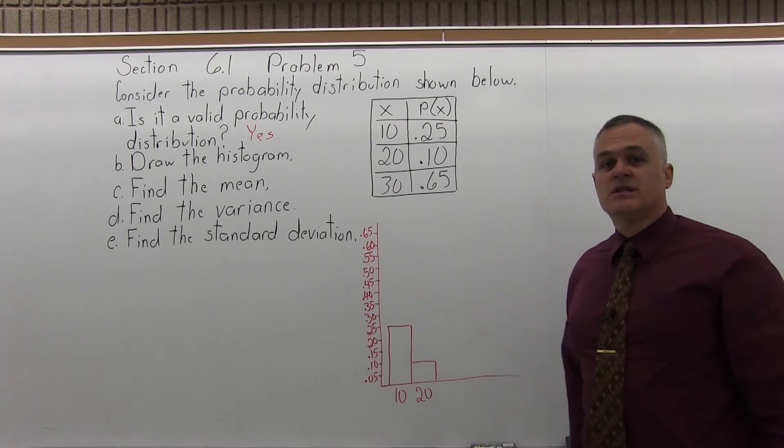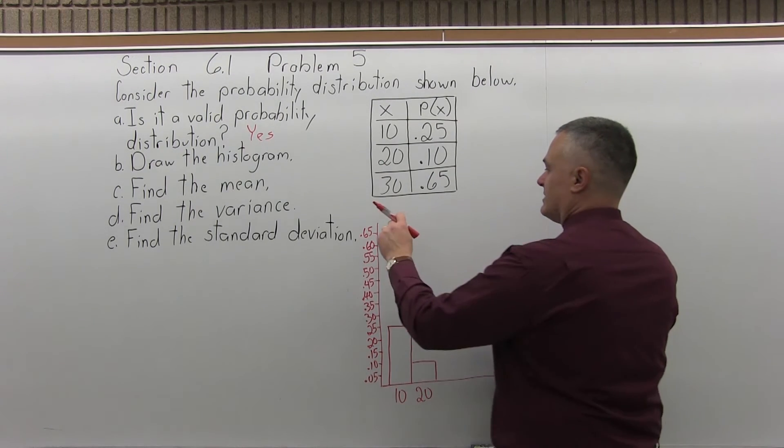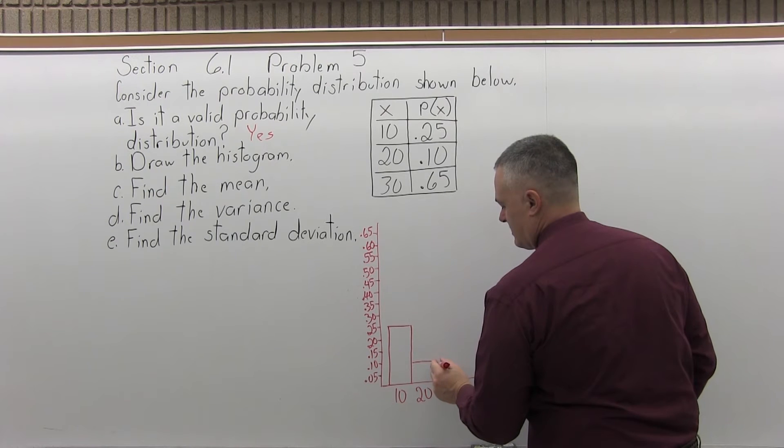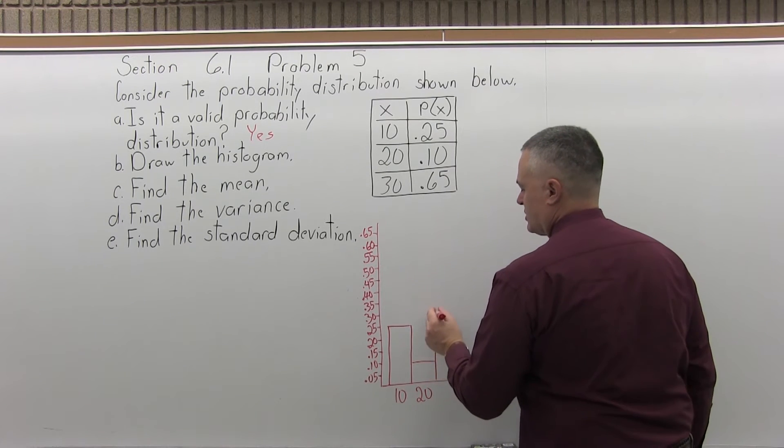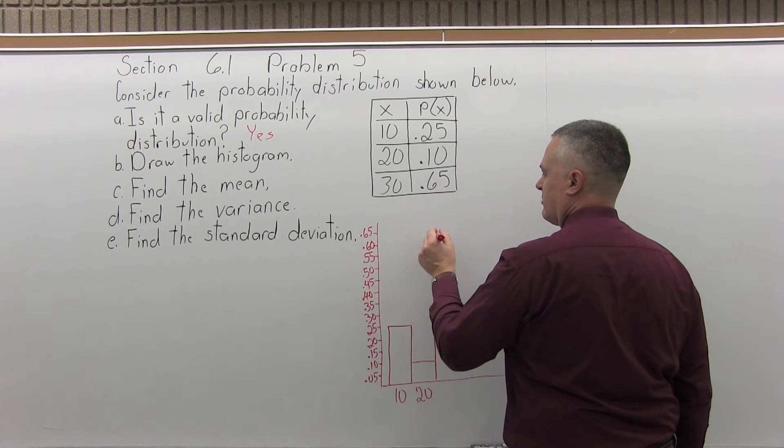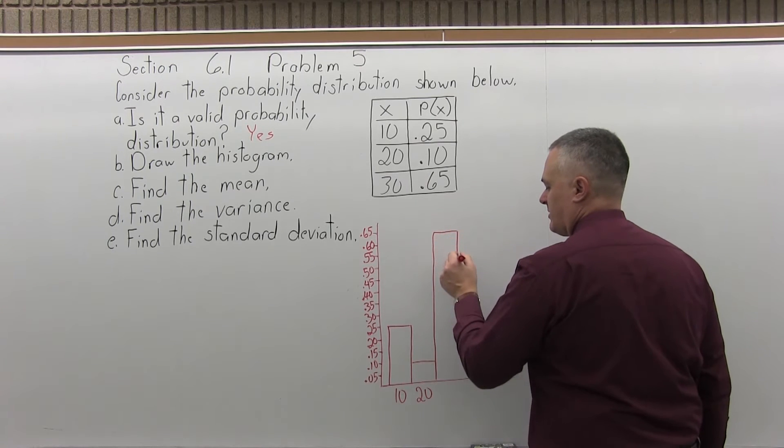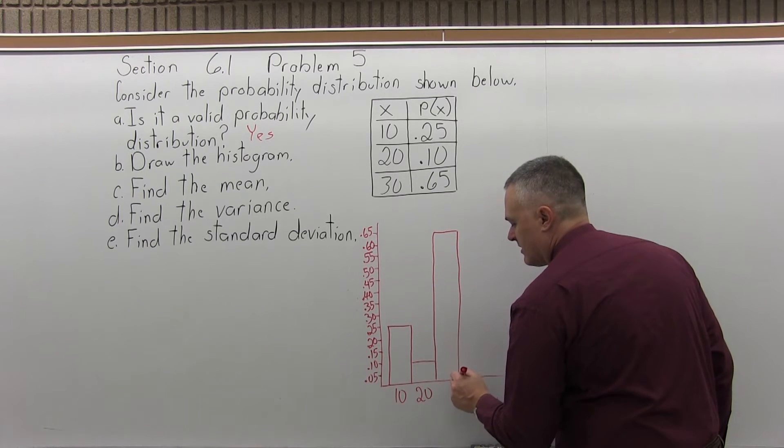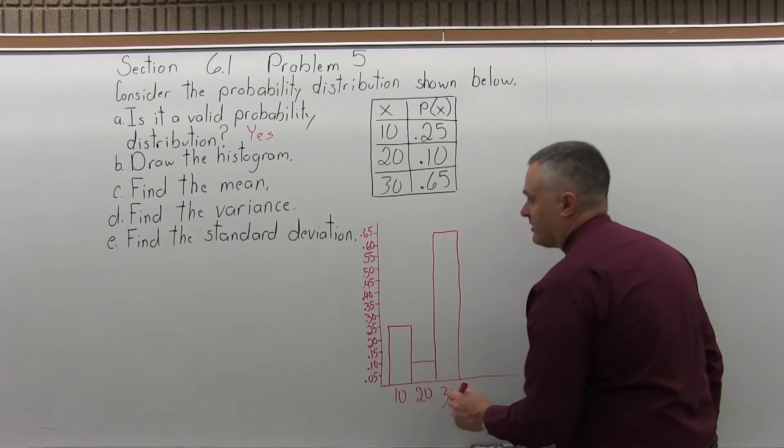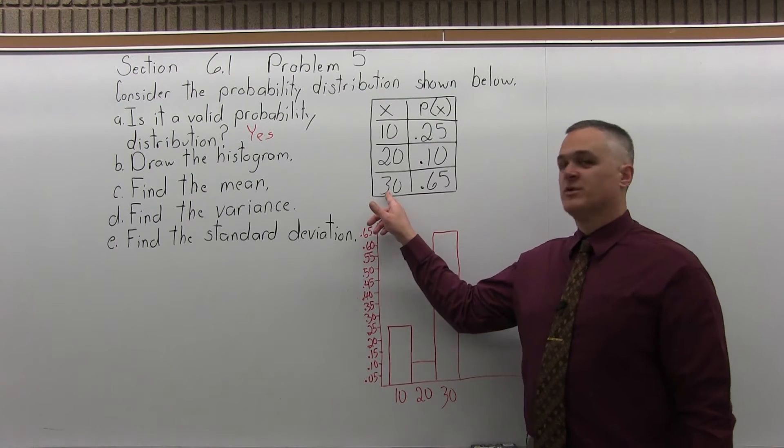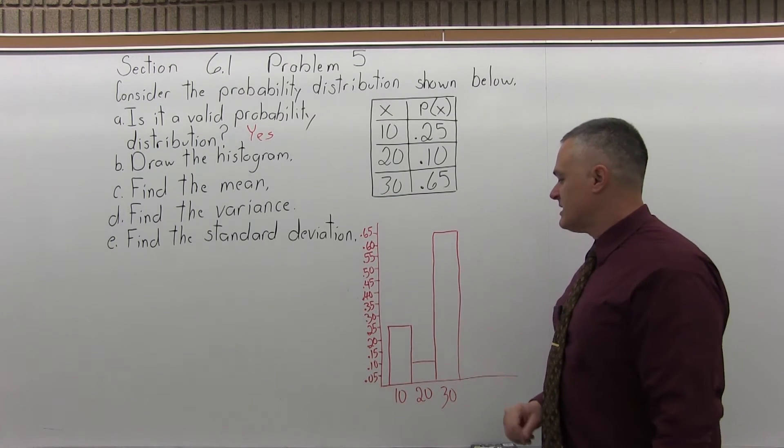And the last bar is very tall. It goes up to 0.65, which is here. So make sure the bars touch. I'll take it up to a height of 0.65 and keep the bars the same width. And the number under the last bar is the number from the first column, which is 30. So there's the histogram.